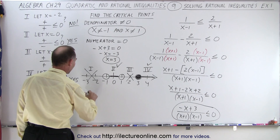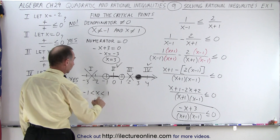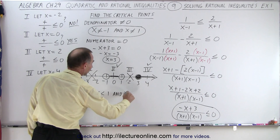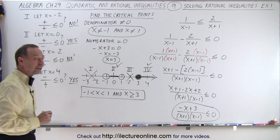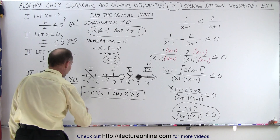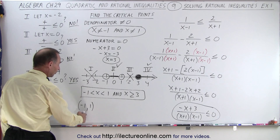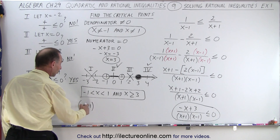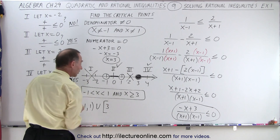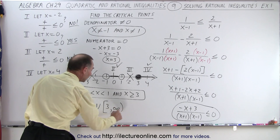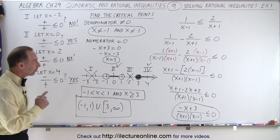So two regions satisfy the inequality. The first is negative one is less than x less than one — not including the endpoints. The second is x greater than or equal to three. In interval notation, the first region is written with parentheses as negative one to one, not including endpoints. The second region uses a bracket at three, going to positive infinity, since three is included but infinity is not. That is the solution set for this inequality.